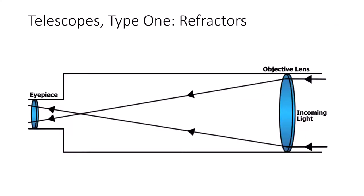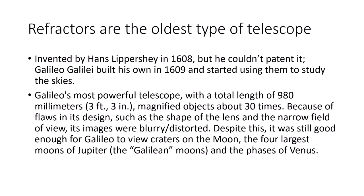The first and oldest type of telescope is the refractor — a lens-based telescope invented by Hans Lippershey in 1608, though he couldn't obtain a patent. Galileo built his own refractor in 1609 and started studying the skies. His most powerful telescope was about three feet three inches with a fixed magnification of 30. Despite its blurry images and narrow field of view, it was enough to see craters on the Moon, Jupiter's four largest moons, and the phases of Venus.